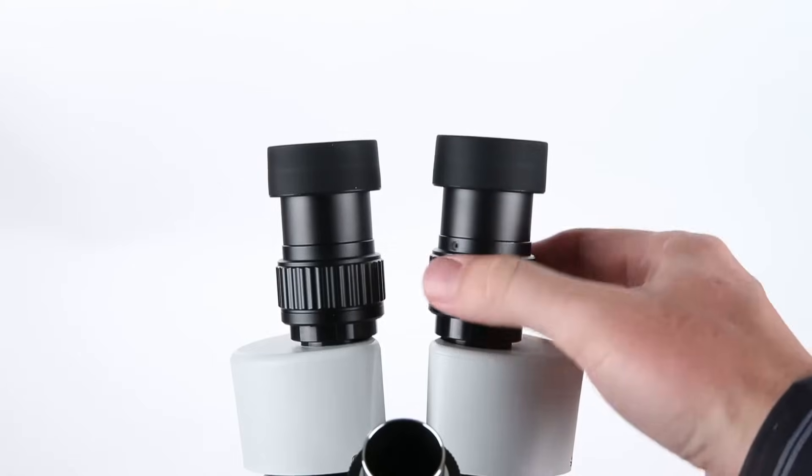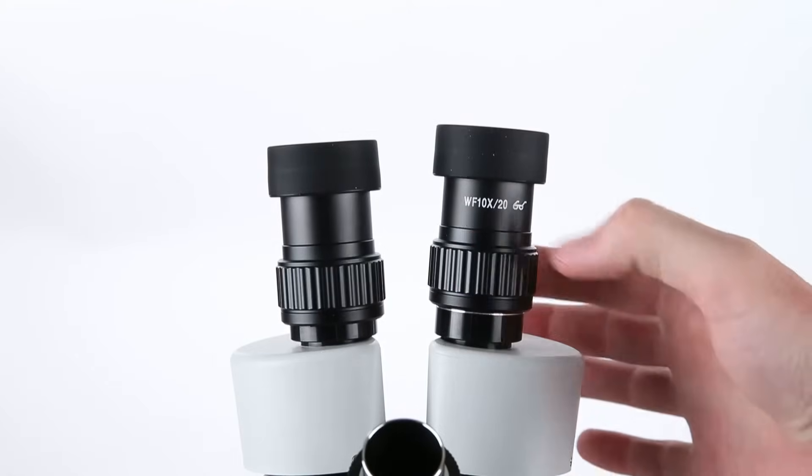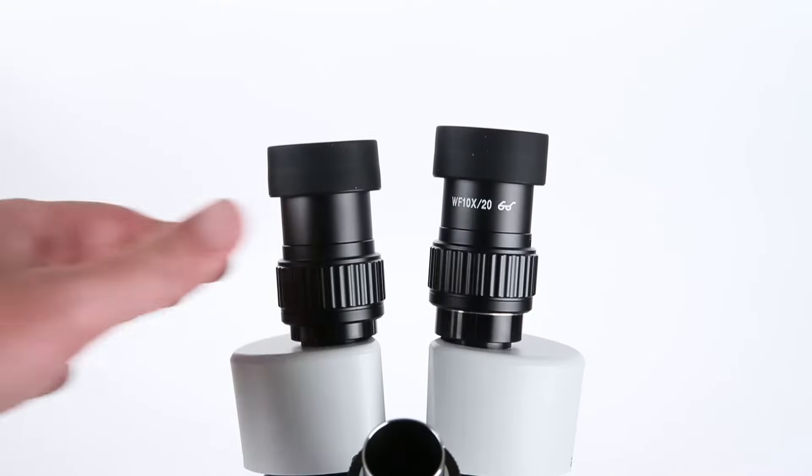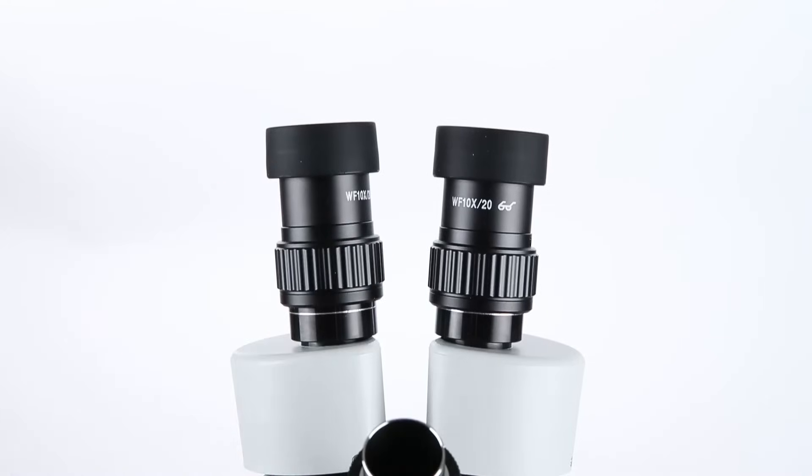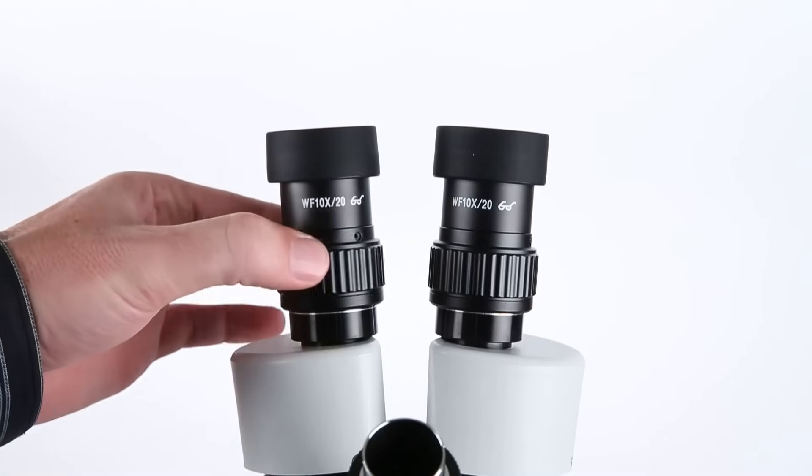On the SM2 Series head, each ocular tube has a diopter for independent focus adjustment. Each ocular tube has a silver ring. The diopter must be set to just above that ring to maintain focus throughout the zoom range.